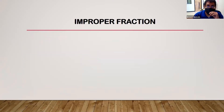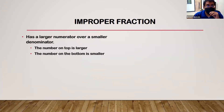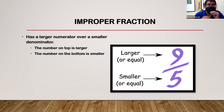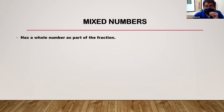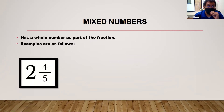Improper fractions have a larger numerator over a smaller denominator, meaning the top number is larger than the bottom number. As you can see with nine-fifths, the nine is higher than five, so that is an improper fraction. It can also be written as a mixed number, which has a whole number part plus a fraction. An example is two and five-fourths, where two is the whole number and five-fourths is the fraction.